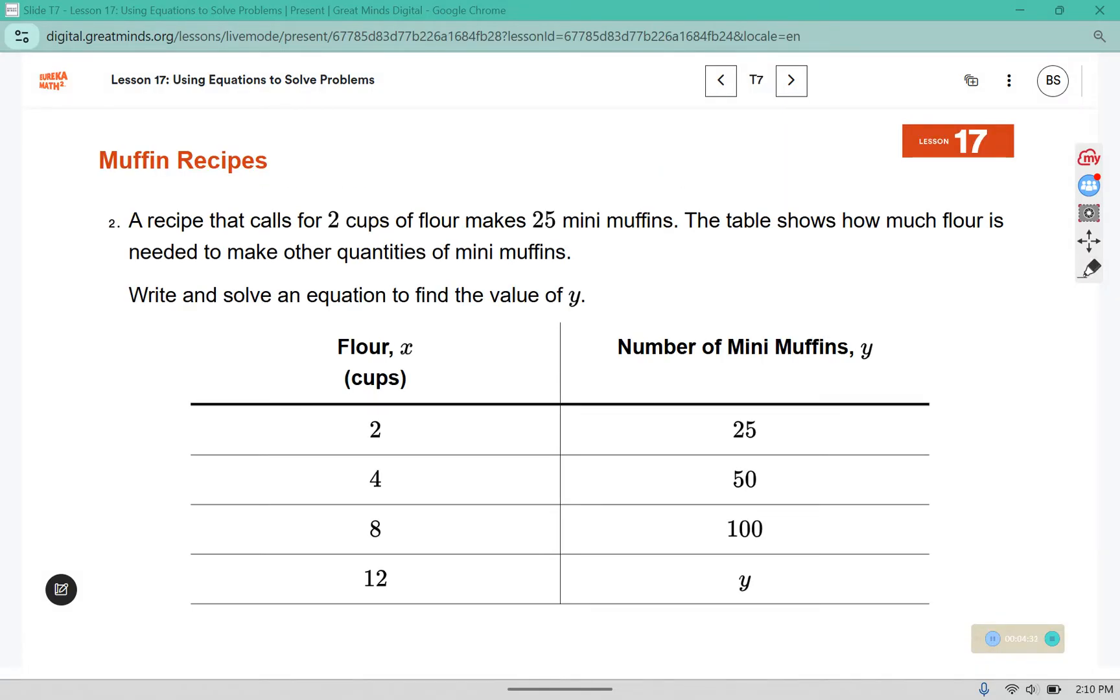In number 2, it says a recipe calls for 2 cups of flour to make 25 mini muffins. The table shows how much flour is used to make different quantities of muffins. So we can write and solve an equation to find the value of y. In order for us to write an equation, we have to check and verify that it is, in fact, proportional, even to begin with.